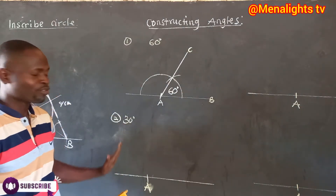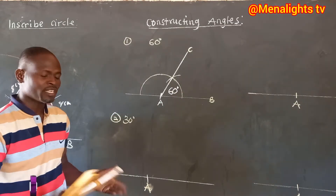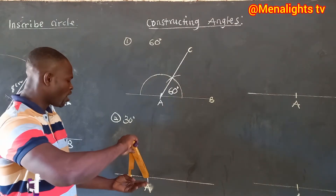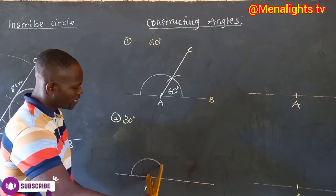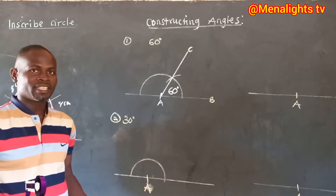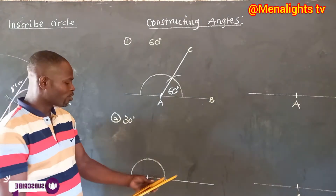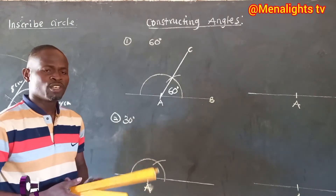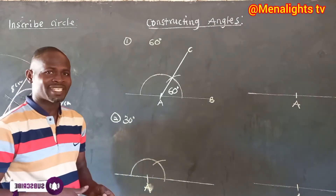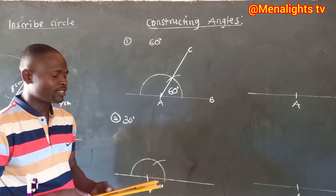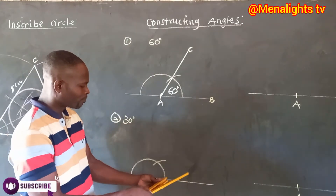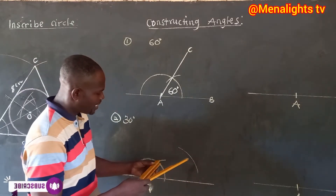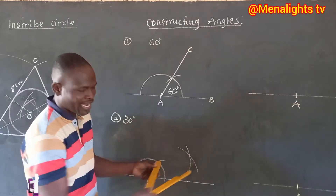Now let's look at how to construct angle 30 degrees. The same way, you stand on A, draw a semi-circle, and that semi-circle is 180 degrees. You stand here and make an arc — that arc is 60 degrees. To get 30 degrees you need to bisect 60, so you stand here and make an arc, then stand here for another arc.